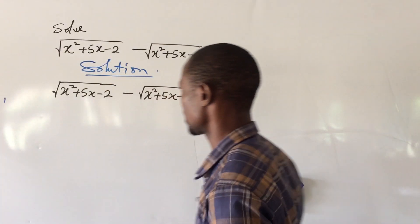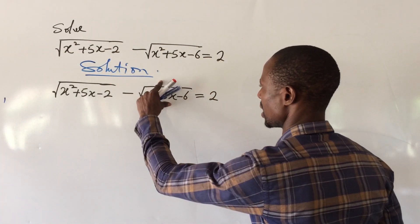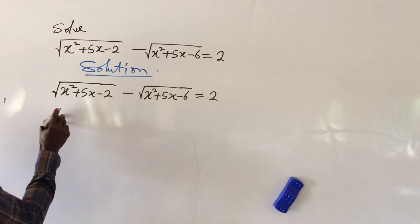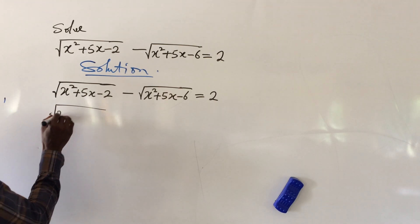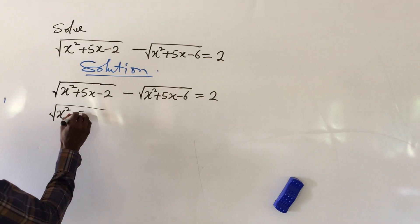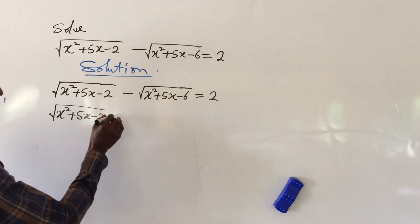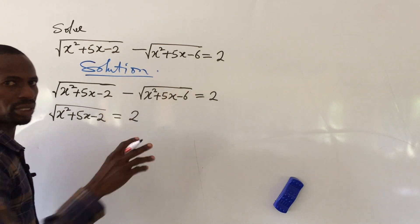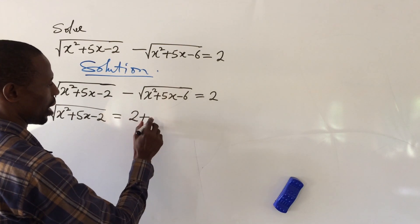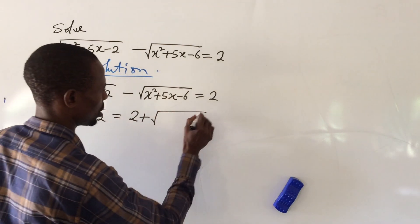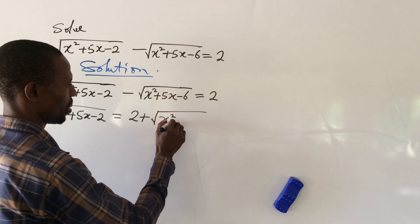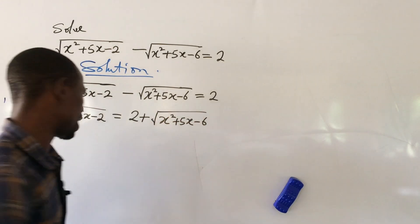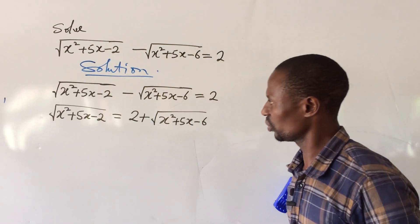All I need to do here is to move this expression to the right-hand side. If I do that, this will give me the square root of x squared plus 5x minus 2 equal to 2 plus the square root of x squared plus 5x minus 6. The minus sign turns to a plus sign. Follow me on this journey.